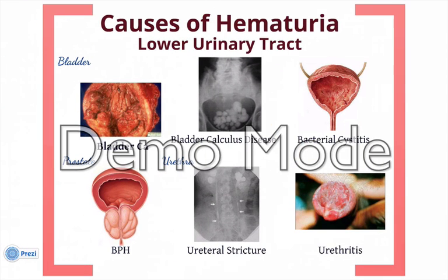Hematuria arising from the lower urinary tract could be caused by bladder cancer — one of the predominant diseases causing hematuria — bladder calculus disease, BPH, urethral stricture disease, significant bacterial cystitis, or in some cases urethritis.